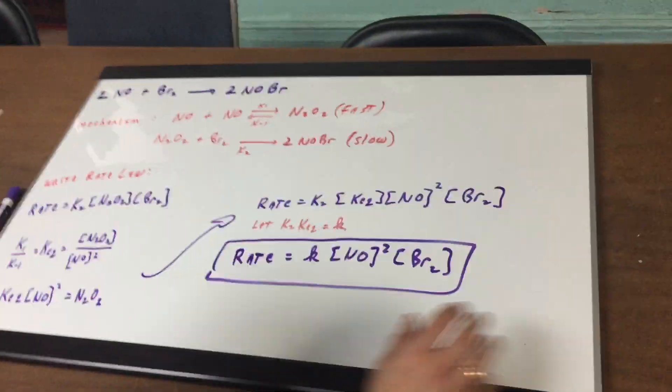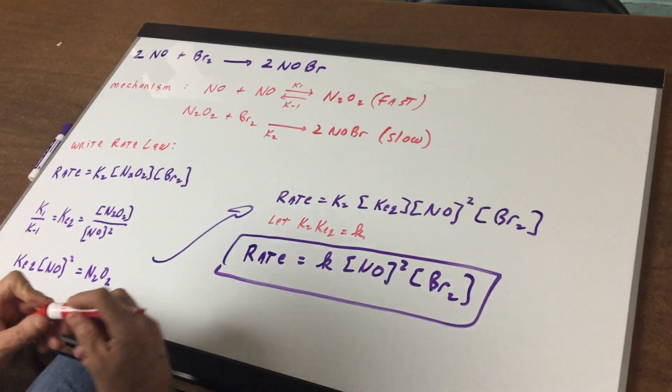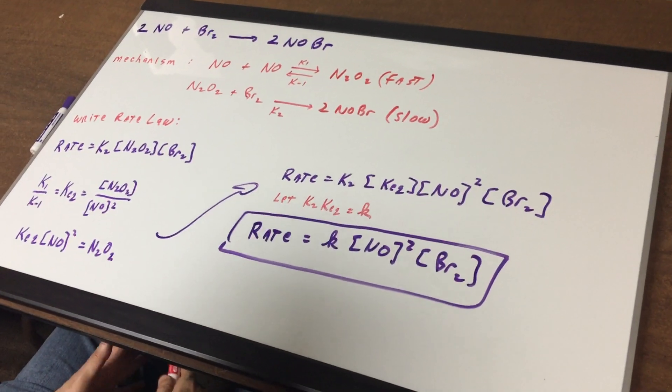So come around. Now, I have a question like this in the DAT Destroyer. But let me show you how to do this to get you started. I give you an overall equation: 2NO plus bromine gives 2NOBr.